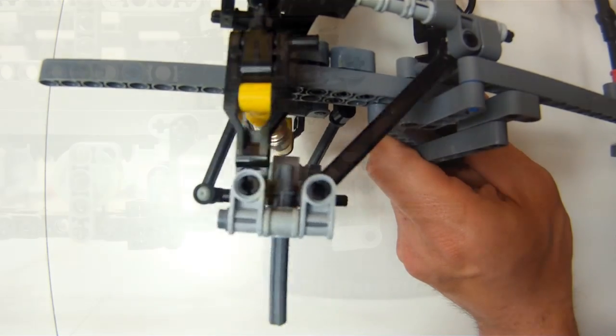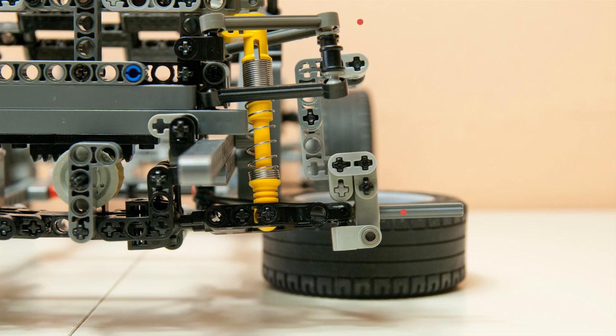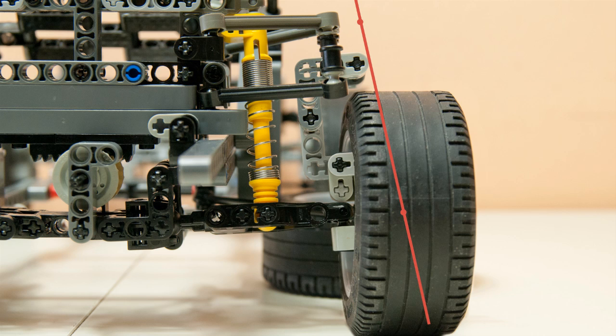When viewed from the front, I have marked the virtual pivot points with red dots, and you can see how far out the imaginary kingpin axis actually is. When we put the tire back on, you can see that the pivot on the ground is on the outside edge of the wheel. That's a bit too much.